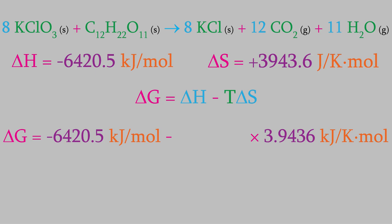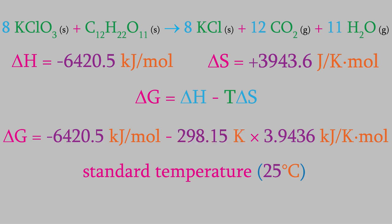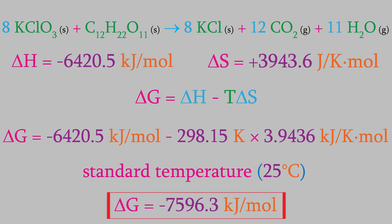To complete the calculation, we need to know the temperature where we perform the reaction. Let's suppose it's standard temperature, which is 25.0 degrees Celsius. That's 298.15 kelvin. When we perform the calculation, we get negative 7596.3 kilojoules per mol of sucrose. So, what does this result tell us?